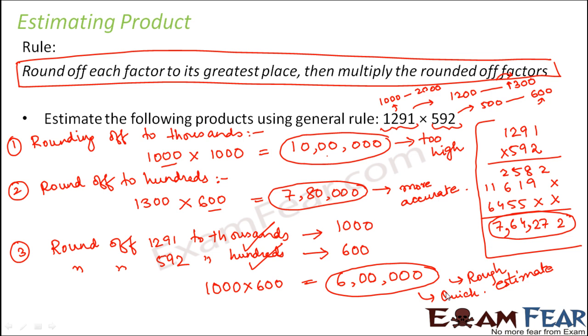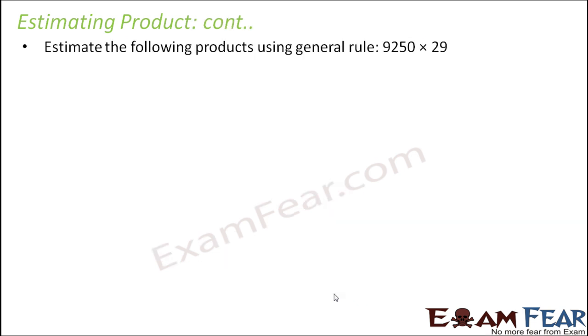And then we multiply the rounded off factors. So in this way we can get a rough estimate which would be fast, through which you can give a fast estimate, and at the same time this would be kind of accurate. Now when you compare the three scenarios, this scenario is more accurate but it is more time consuming. The first scenario is very fast but it is not at all accurate. In the third scenario, it is medium accurate and medium quick, so this is a more sensible guess. Therefore, whenever we have to estimate product, we round off each factor to its greatest place and then we multiply the rounded off factors.